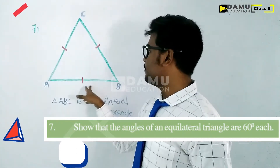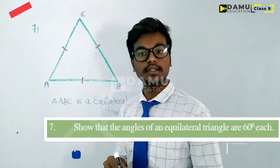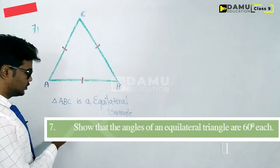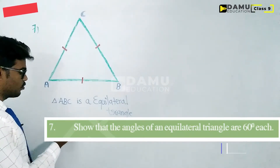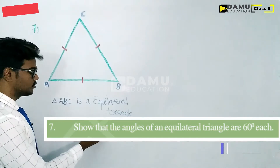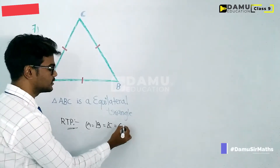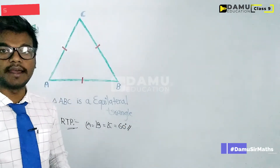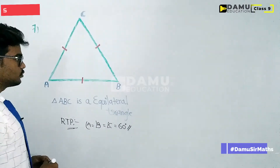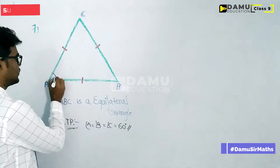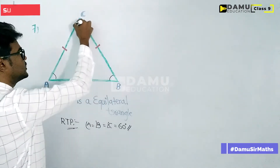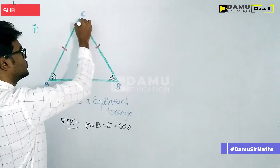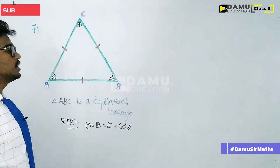So let us consider sides AB and AC. The sides are all equal. From the isosceles triangle property, what we have to take is RTP — Required To Prove. What is required to prove here is: angle A equal to angle B equal to angle C, all equal to 60 degrees. We have to show this. Let us consider all angles as X degrees, since we do not know their value yet.